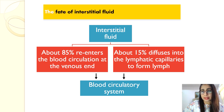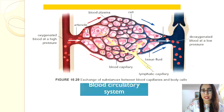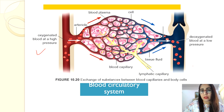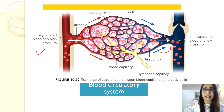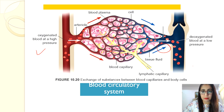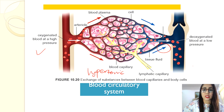About 85% of the tissue fluid formed at the arterial end of the capillaries is reabsorbed into the blood by osmosis at the venous end. Reabsorption occurs because the blood plasma in the blood capillary is hypertonic relative to the tissue fluid. This causes water to diffuse from the tissue fluid back into the capillaries.